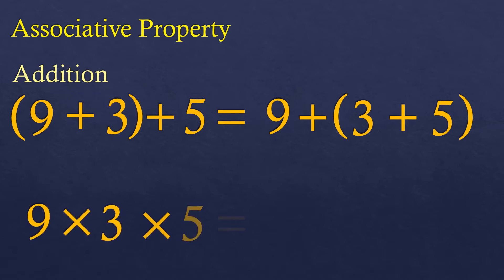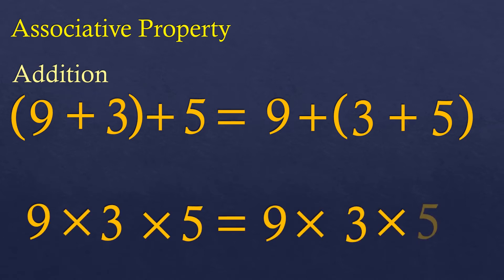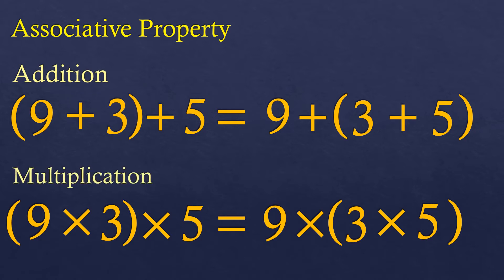For multiplication, with 9 times 3 times 5, we can group 9 and 3 first on the left side before multiplying by 5, and on the right side group 3 and 5 first before multiplying by 9. The answer is the same, according to the associative property of multiplication. You can try it on your own to verify.